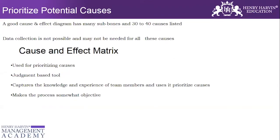Once we have identified and categorized the potential causes, it is very important to prioritize them, because a good cause and effect diagram would have many sub-bones and would have 30 to 40 causes listed. It is not possible to work on all the possible causes because we don't have that much time or resources to work on all of them.